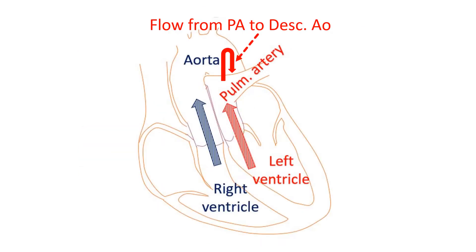Reversal of ductal flow can also occur if there is a pre-ductal coarctation or interruption of aortic arch, as the descending aortic pressure is low and below that of the pulmonary artery. In all these situations, saturated blood from the left ventricle is pumped into the pulmonary artery and into the descending aorta across the patent ductus arteriosus. Desaturated right ventricular blood is pumped into the aorta and reaches the upper limbs, head, and neck.